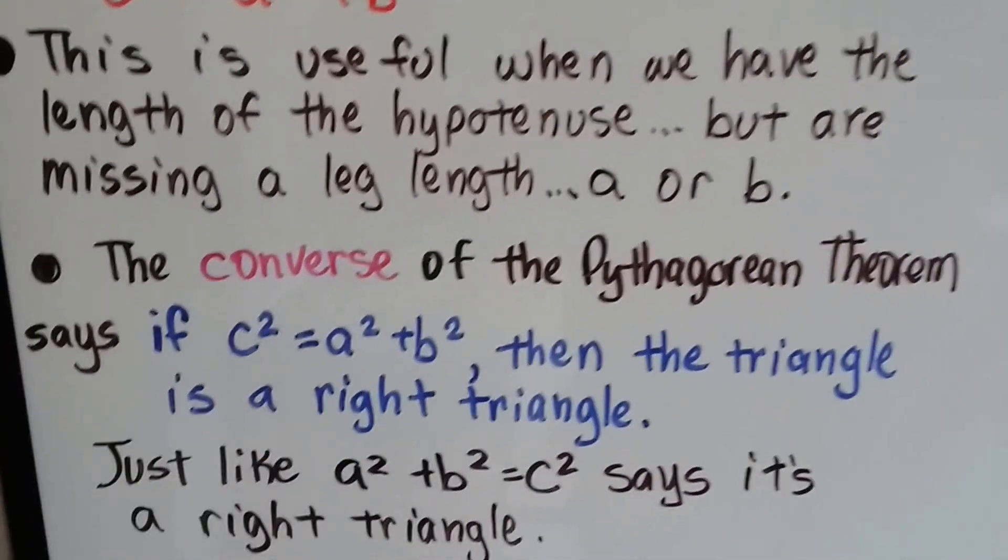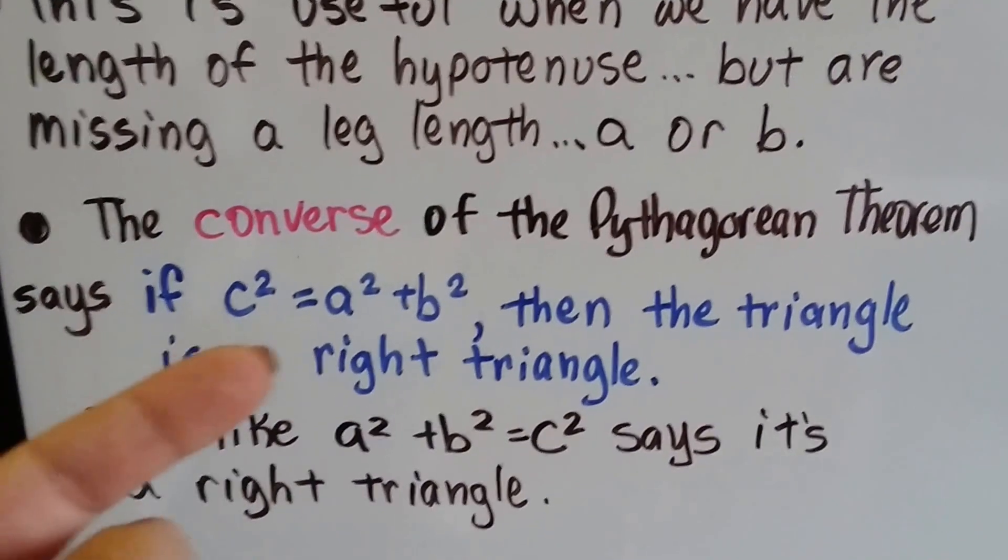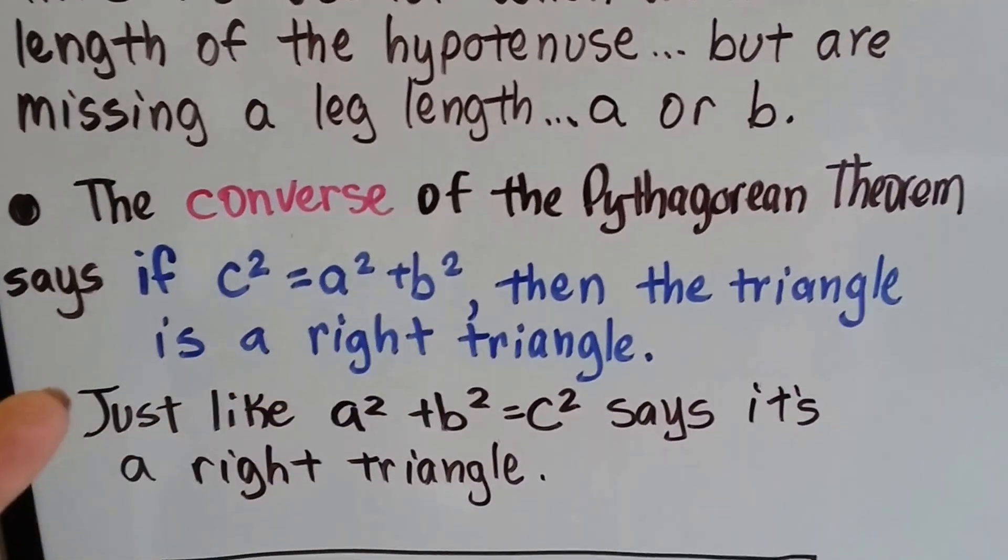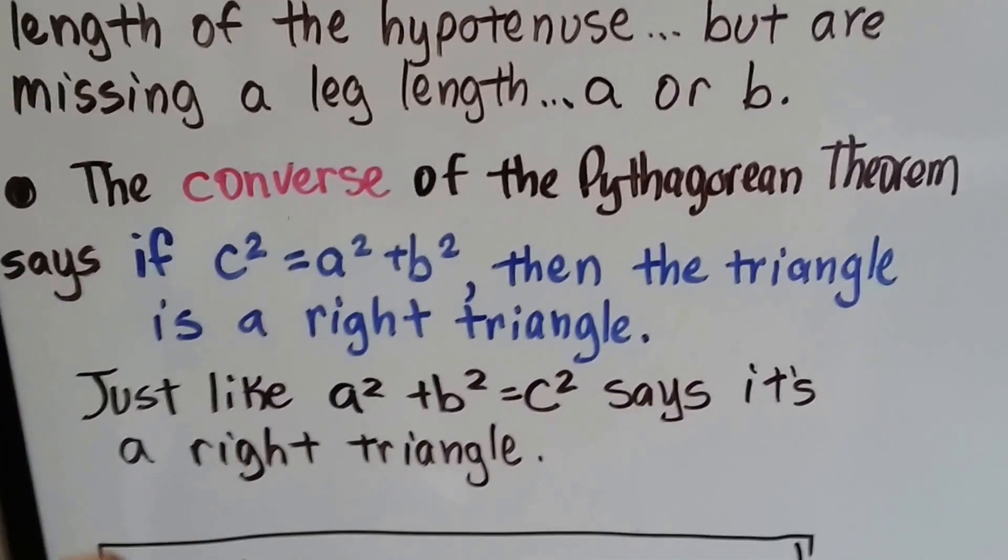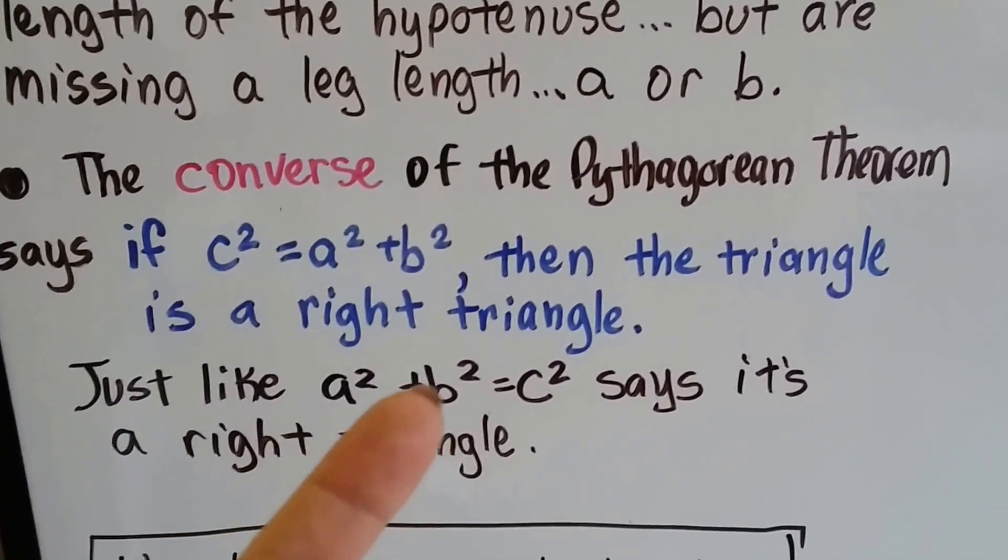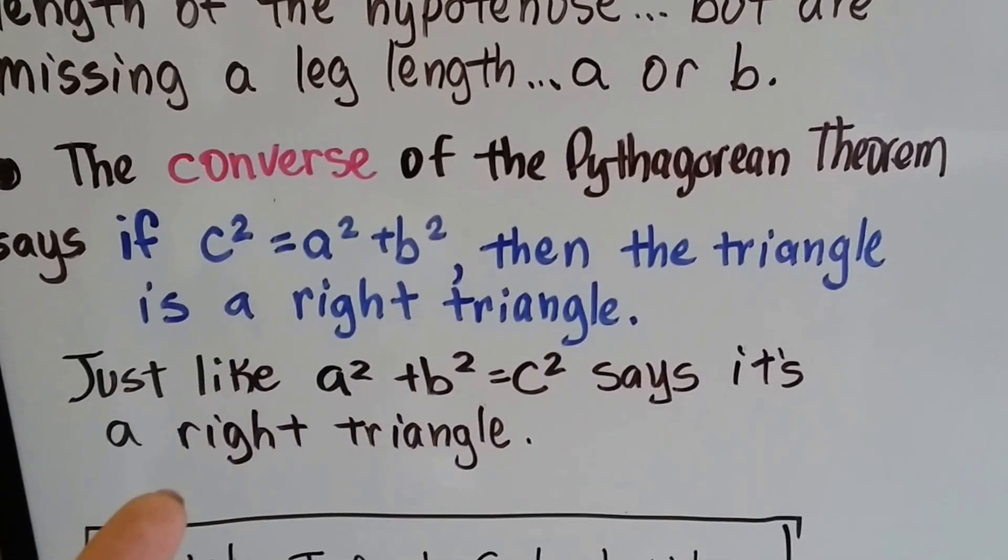And the converse of the Pythagorean Theorem says if c squared is equal to a squared plus b squared, then the triangle is a right triangle. Just like the forward version, a squared plus b squared equals c squared, says it's a right triangle.